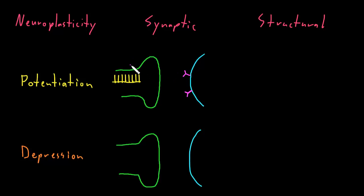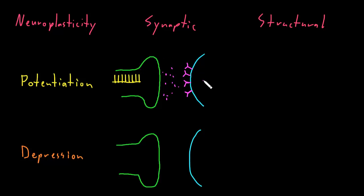One change that can occur is that for each action potential reaching the axon terminal, more neurotransmitter may be released into the synapse, so a bigger response is seen in the target cell. Or the change may occur on the postsynaptic membrane — there may be an increase in the number of neurotransmitter receptors, or changes to the types of receptors or second messengers, so that for any given amount of neurotransmitter released, a bigger response is seen in the target cell because it's much more sensitive. Either of these changes — the axon terminal releasing more neurotransmitter, or the postsynaptic membrane becoming more responsive — results in an increased response in the target cell per action potential. That would be synaptic potentiation.